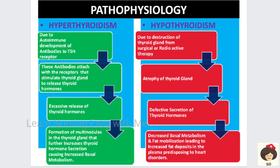In hypothyroidism pathophysiology, there can be destruction of thyroid tissue due to removal, infection, radioactive therapies, or other conditions. This leads to atrophy — wasting of the thyroid tissue — resulting in decreased synthesis of thyroid hormone and decreased basal metabolism. As a result, fat molecules are not metabolized; whatever fat is consumed goes directly into the plasma, causing obstruction in blood vessels and predisposing to disorders including heart disease.